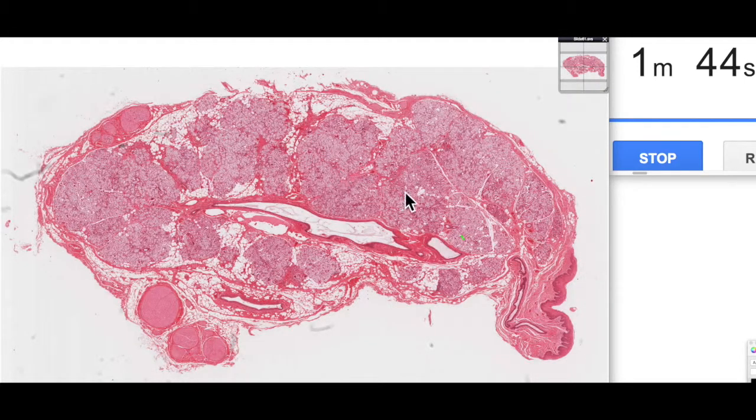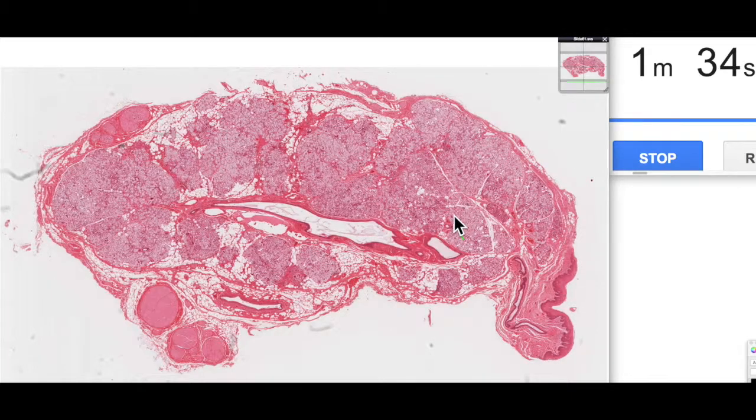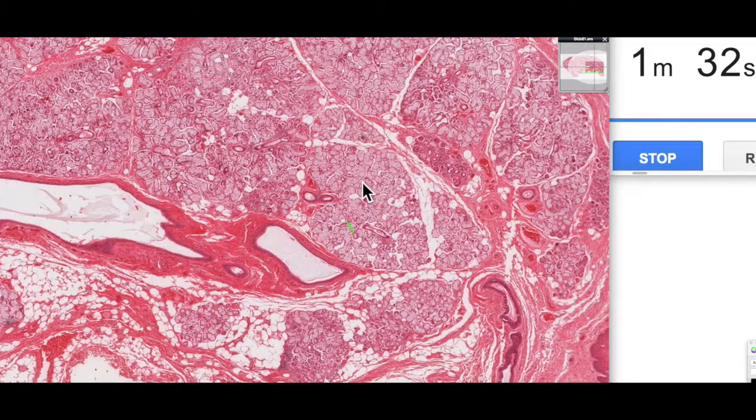Another area, as I mentioned, where we find it is in ducts of exocrine glands. So this is a section of the sublingual salivary gland. It sits beneath your tongue. These are all the secretory acini, and these are actually mucus acini.